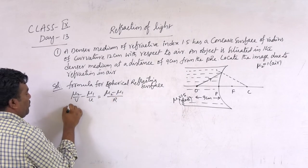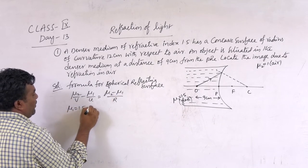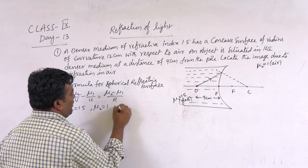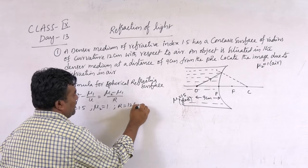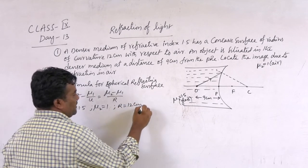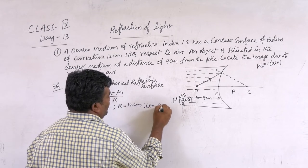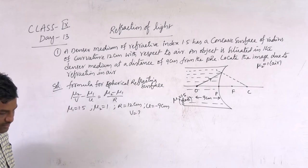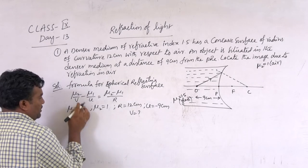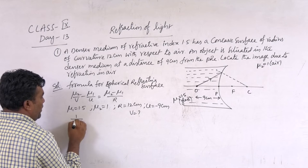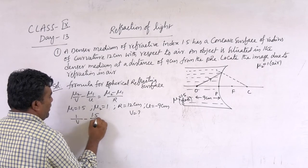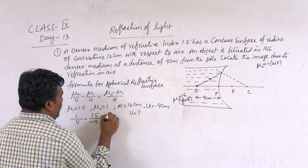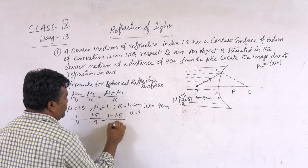First of all, denser medium: μ1 = 1.5, μ2 = rarer medium = 1. Radius of curvature R = 12 cm, and object distance U = -9 cm. We need to find V. Substituting values: 1/V minus 1.5/(−9) = (1 − 1.5)/2.